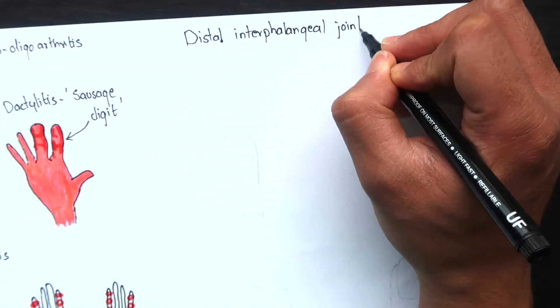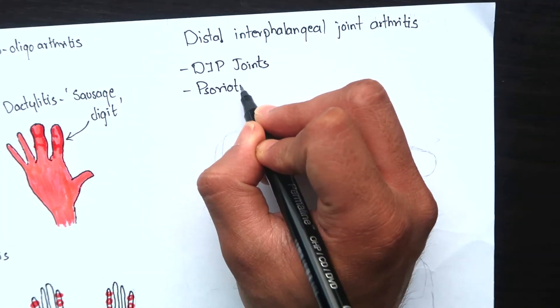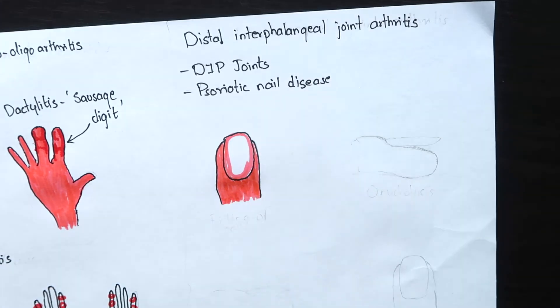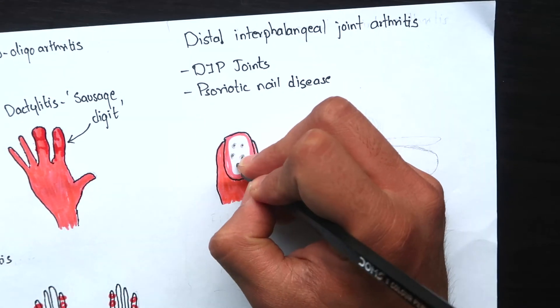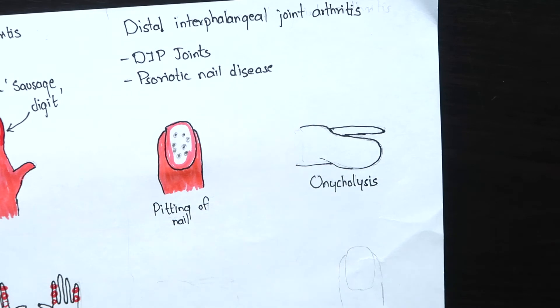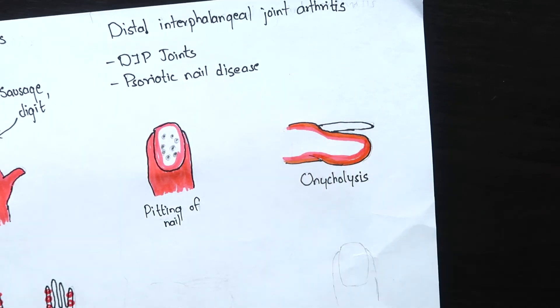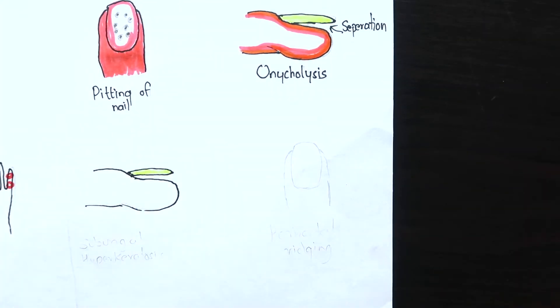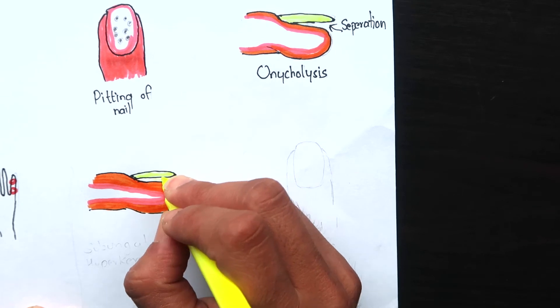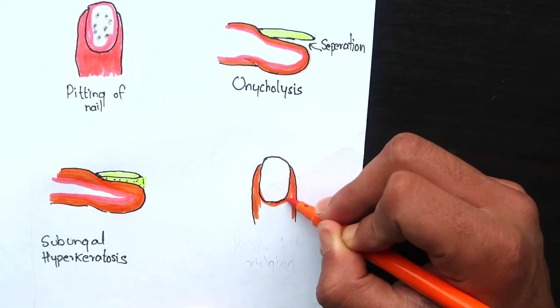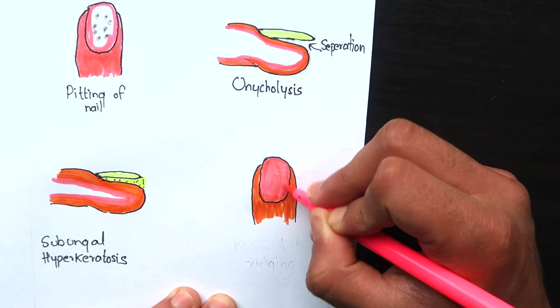Next one is distal interphalangeal joint arthritis. It affects distal interphalangeal joints and is associated with psoriatic nail diseases such as pitting of nail where there are small depressions on the surface of the nails, onycholysis which is separation of nail from the nail bed, subungual hyperkeratosis where there is excessive proliferation of keratinocytes in the nail bed, and horizontal ridging of nails.